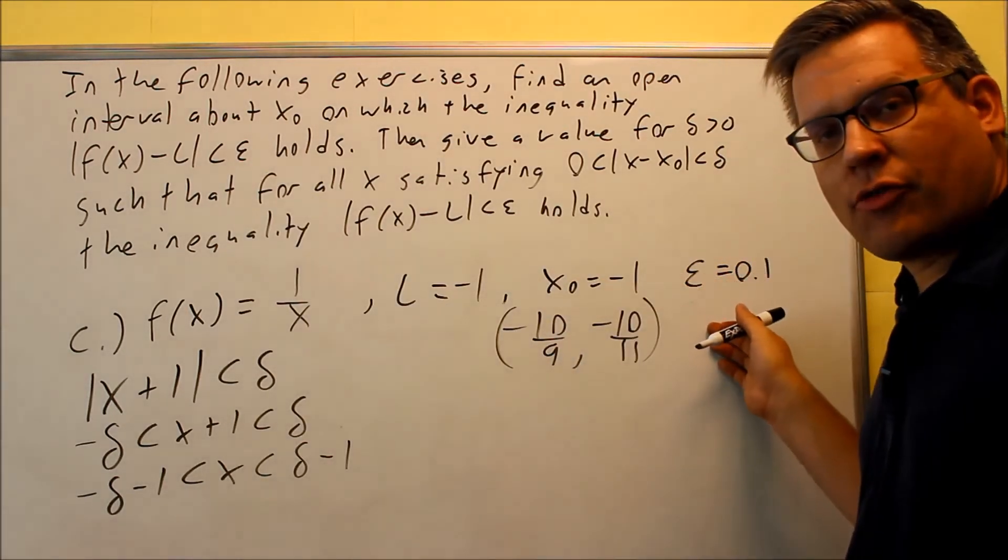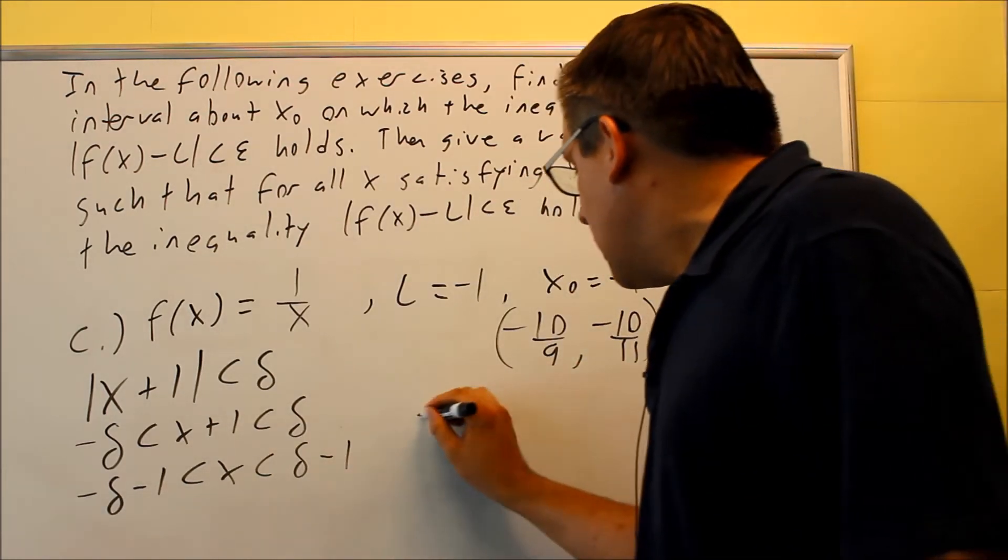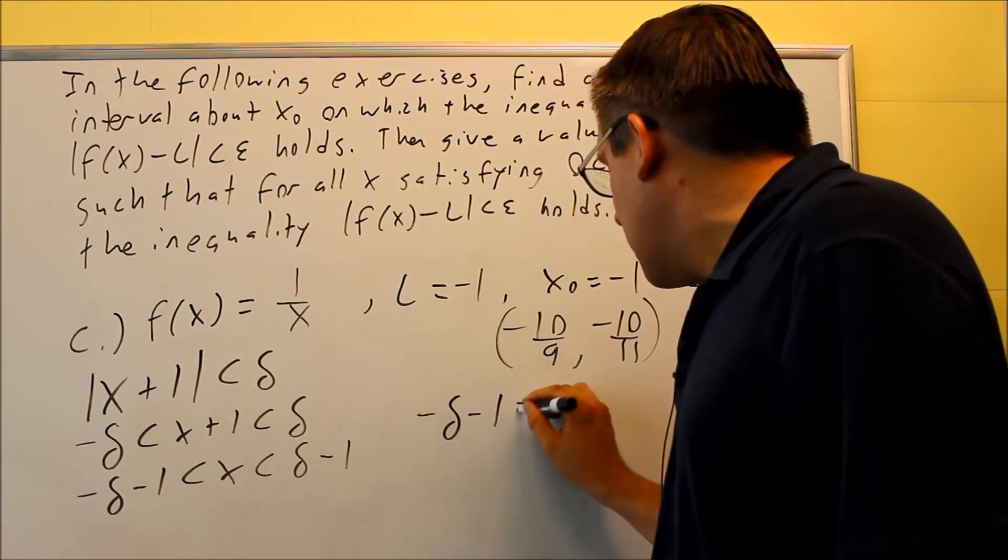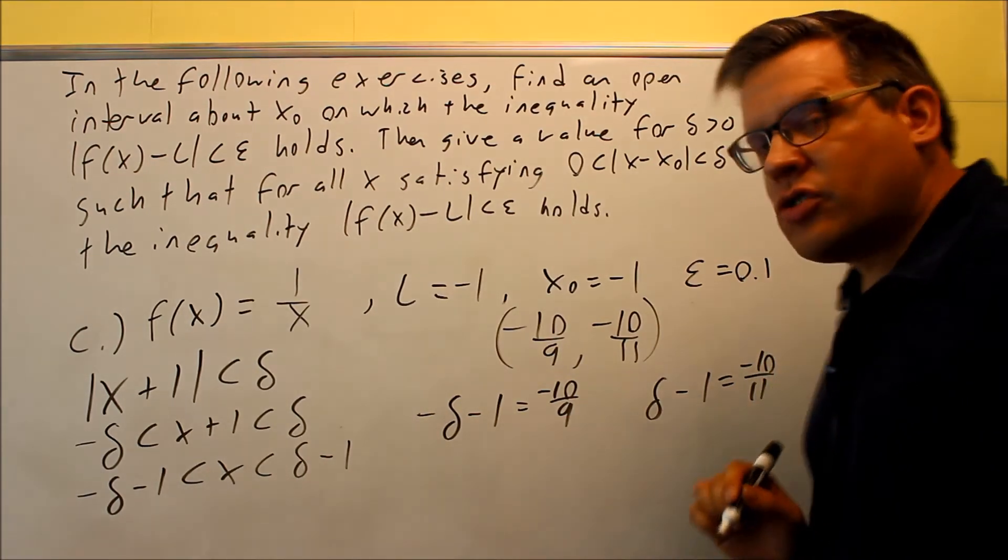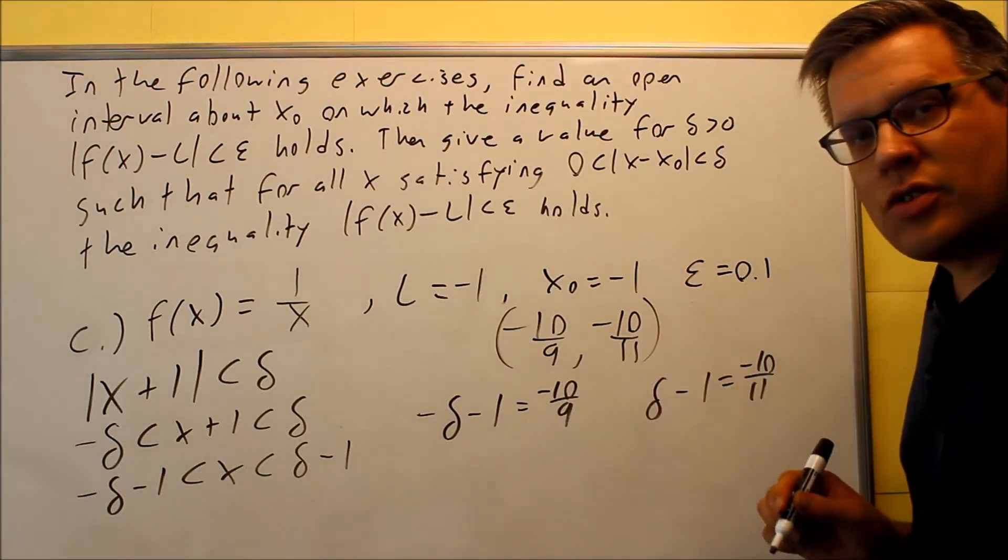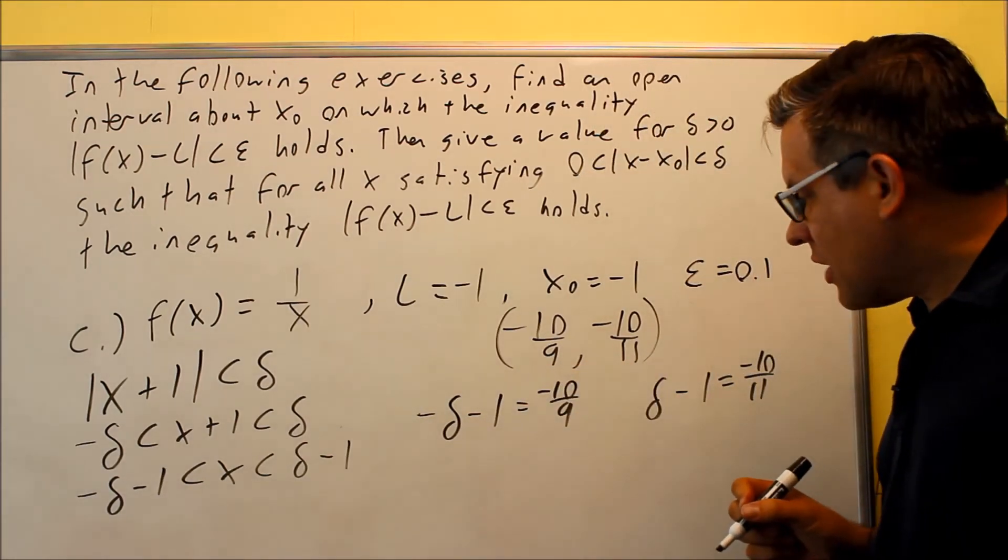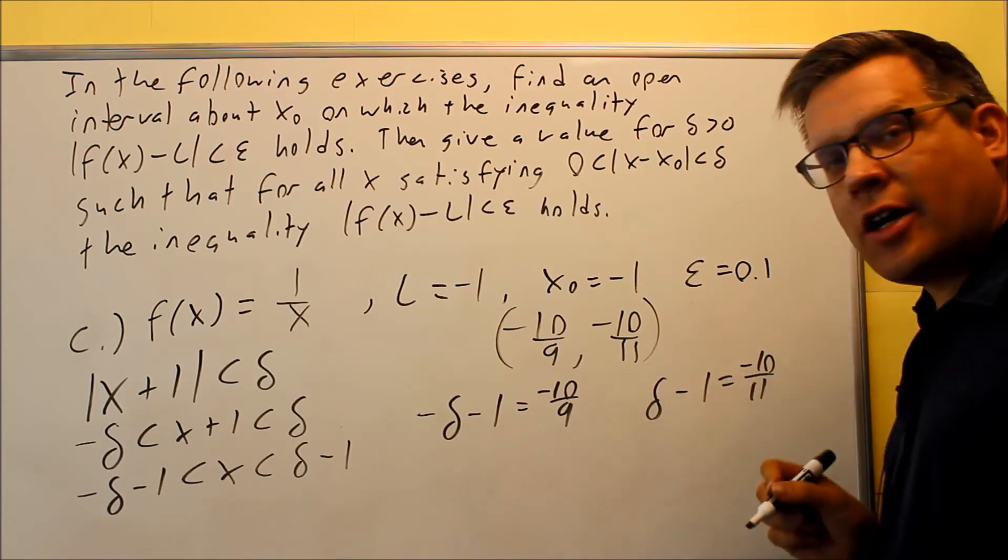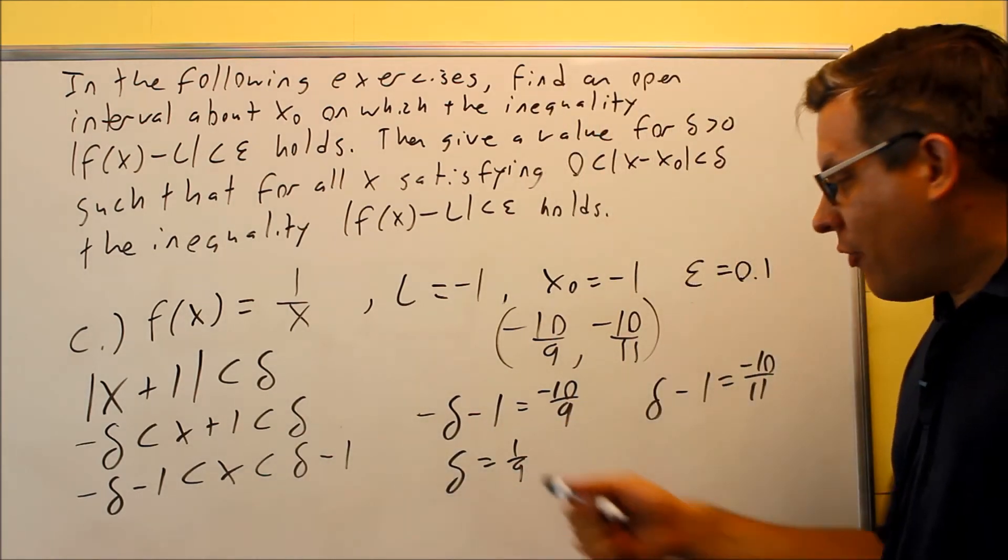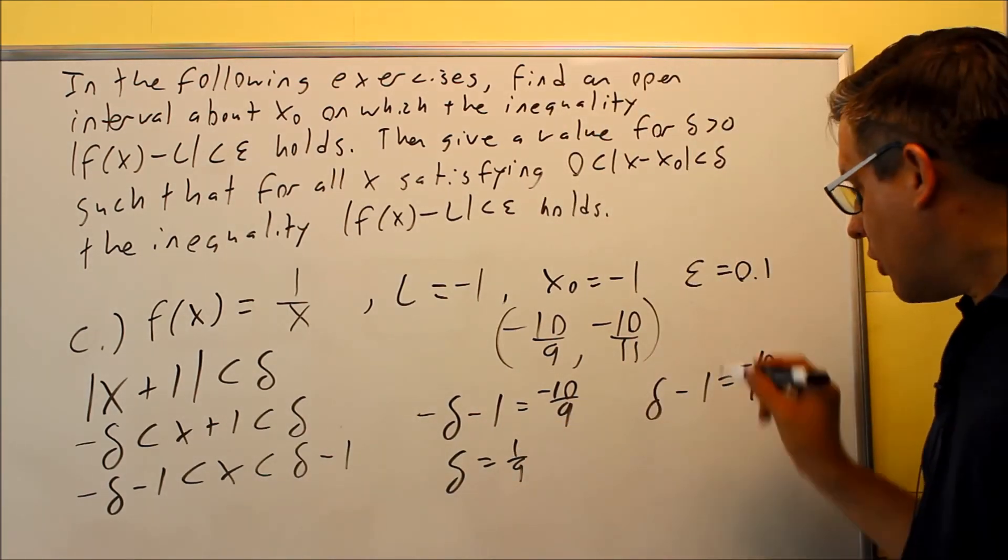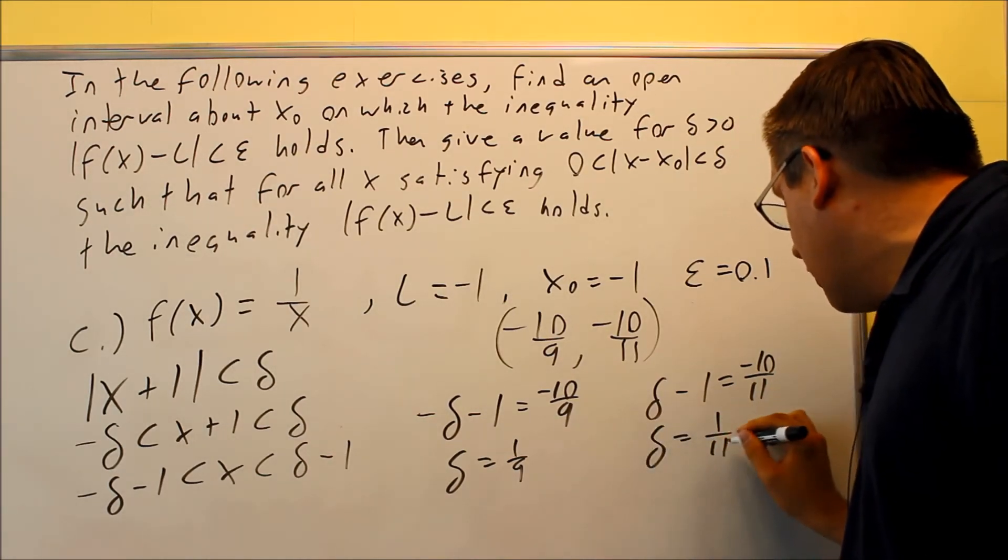Here is our inequality, the open interval that we set up before. So each of these we'll set equal to each of these. We're going to do negative delta minus 1 equals negative 10 ninths, and delta minus 1 equals negative 10 elevenths, and we're going to solve both of these individually. If you solve the first one, you're going to add 1 to both sides. That's really 9 over 9 you'll get there. And when you apply the negative, you're going to get 1 ninth for your delta. For this one, you're just going to add 1 to both sides, which is 11 elevenths, and you're going to get 1 eleventh.